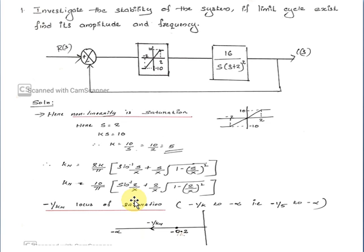Next, the minus 1 by KN locus for saturation. In the case of saturation, the minus 1 by KN locus is from minus 1/K to minus infinity. Therefore, here K is equal to 5, that is minus 1/K equals minus 0.2. So the minus 1 by KN locus is from minus 0.2 to minus infinity.